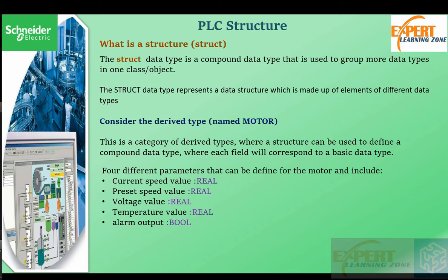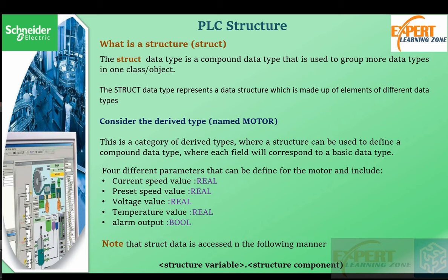For example, the current speed of the motor, the preset speed, voltage, temperature, alarms based on faults, or conditions that have defaulted. To access a structure, we use the structure name — the parent name — followed by a dot and the component name. For instance, if the structure is named 'motor' and we want the current speed, we call motor.currentSpeed.